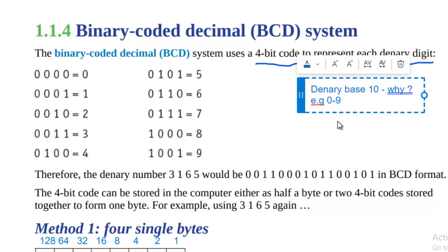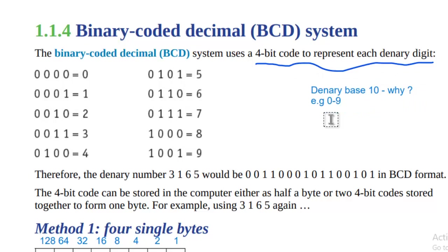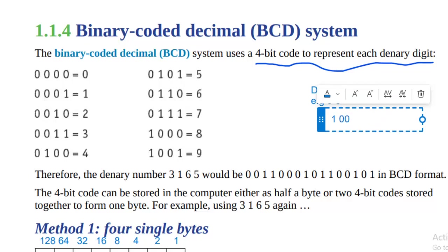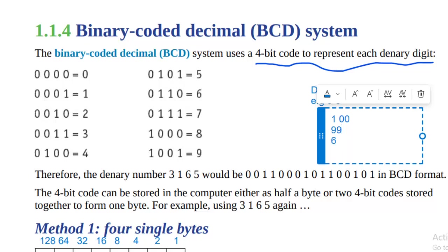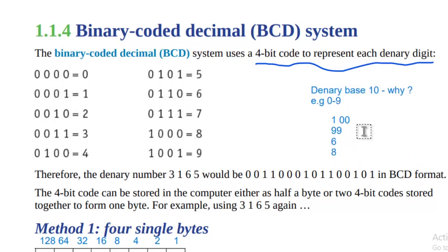Denary means base 10. It is known as base 10 because we are using only 10 digits to represent any denary number. We use digits zero through nine to make any number. For example, to make 100 we use one and two zeros; to make 99 we use the digit 9 twice. We can make any number from the combination of zero to nine, which is why it is called base 10.